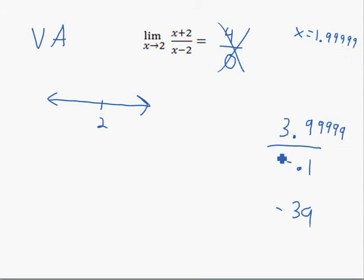Over negative. It's going to be a negative number because 1.99999 is less than 2. So when I subtract 2 from it, I get negative 0.00001. Now what that is going to give me is negative 399999.